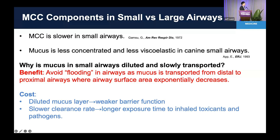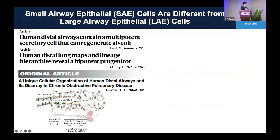Slower clearance rate might also cause longer exposure time to inhaled toxicants and pathogens — those could be potential reasons for small airway vulnerability. Also, there is a lack of submucosal glands in the small airway region, which might also contribute to vulnerability, because submucosal glands are very critical especially in large airway tracheal mucociliary clearance but small airways lack those structures.